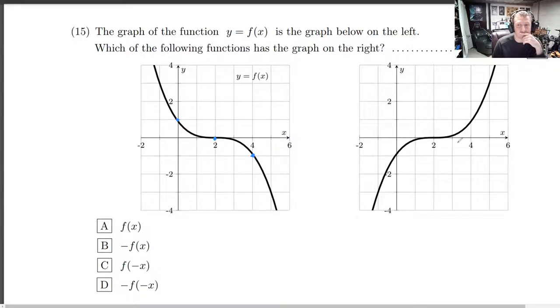Okay, I think I know it already. It still has the same zero, so it hasn't been shifted left or right. But what happened to the y-intercept? It went to the negative of itself. And what happened to this point over here?